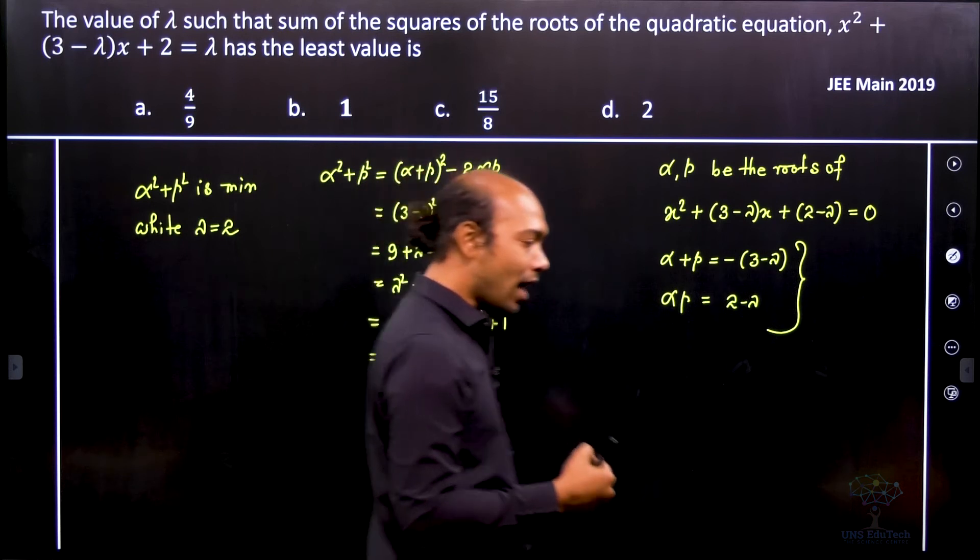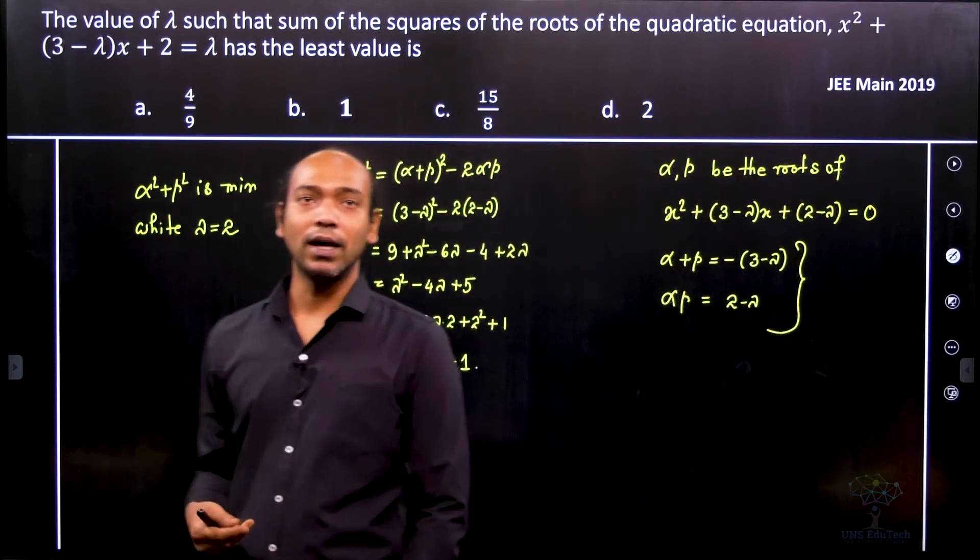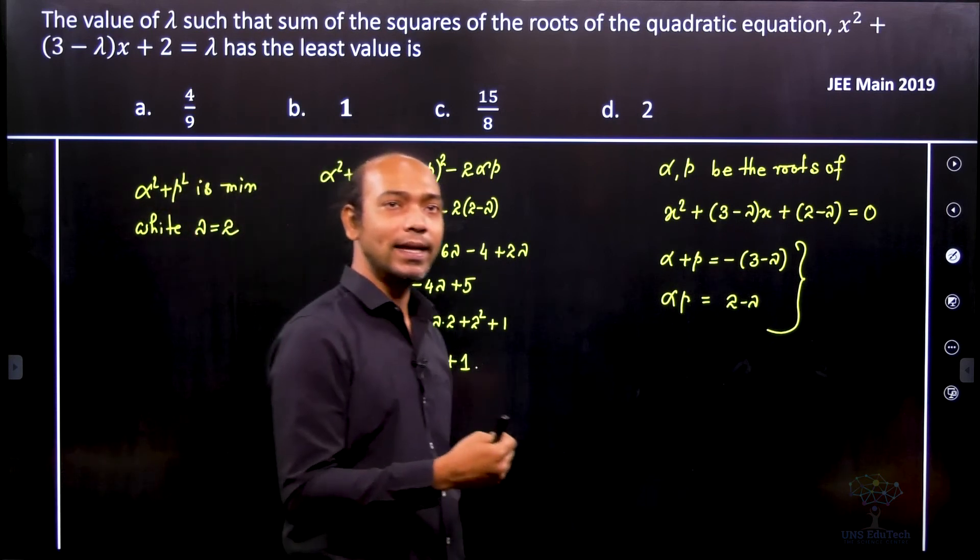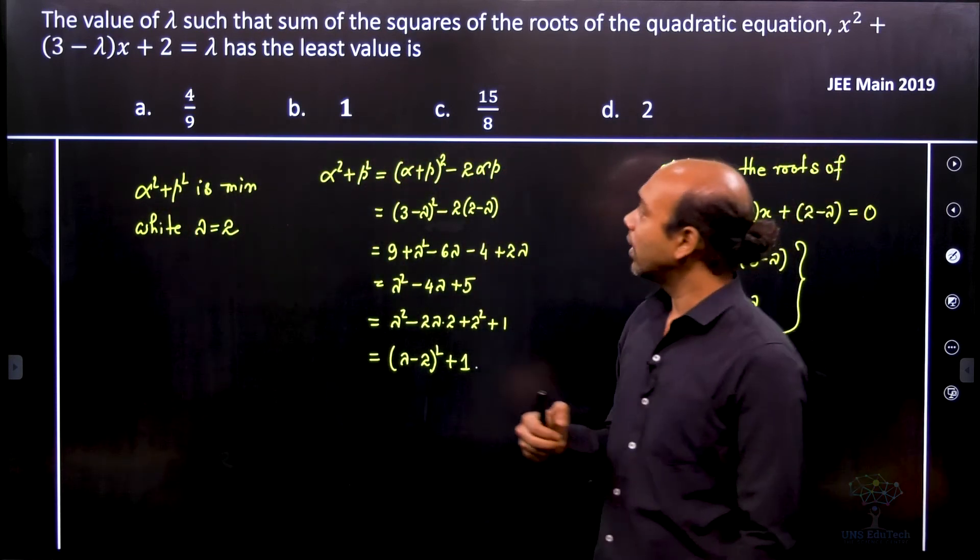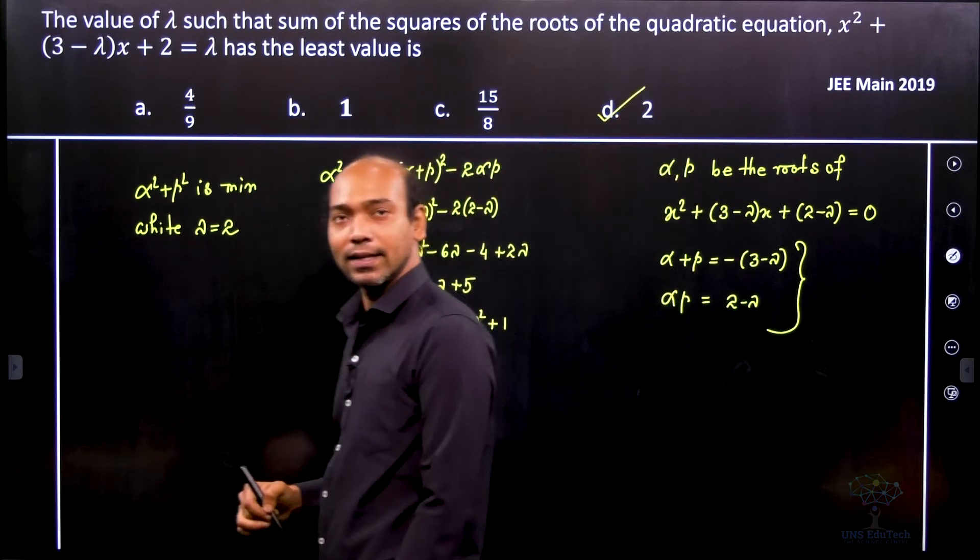In this case it asks to find the value of lambda for which the sum of squares of the roots is minimum. So therefore in this particular case option d is the correct answer.